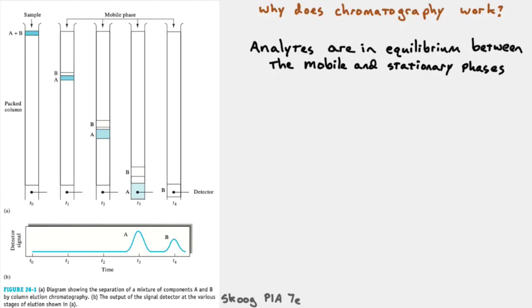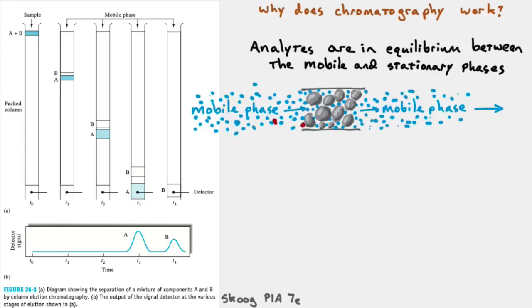So, why does this work? It works because the analytes are in this continual equilibrium process between the mobile phase and the stationary phase. I drew this diagram, and the gray blobs are the stationary phase. This is a pretty bad stationary phase because they're not uniformly sized, and they're not perfectly spherical.